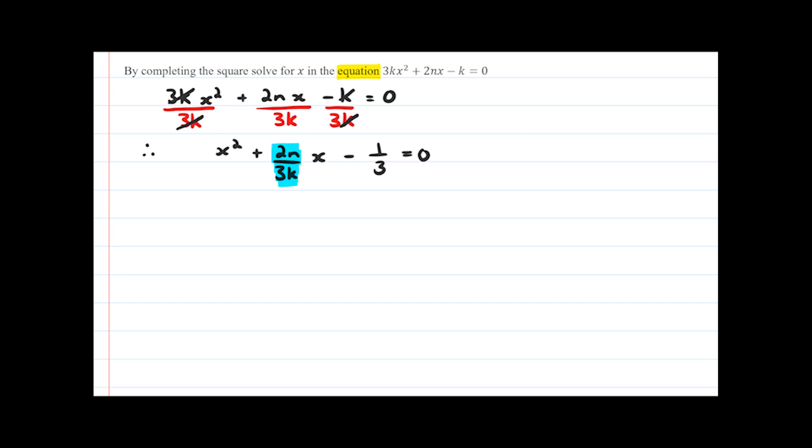Just note how I've written the b term in front of the x. A lot of students sometimes have difficulty separating the fractions, so if you can write it out like this so you can see distinctly what the b value is. The next step was to move the constant term over to the right hand side, so we'll do that and get x² + (2n/3k)x = positive 1/3.